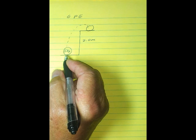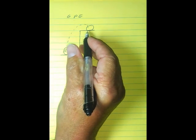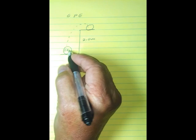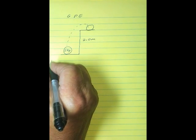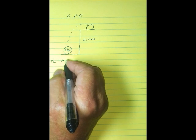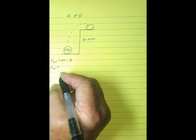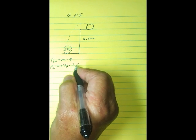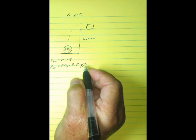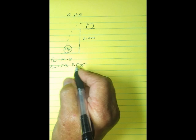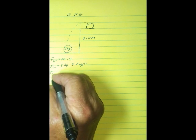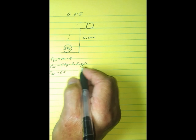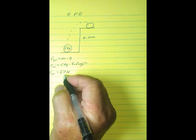Let's first take a look at the weight of the ball. In order to put the ball up on the shelf, we have to overcome the weight of the ball to move it that particular distance. We know that the force of weight equals mass times gravity. The mass is 5 kilograms, and gravity is 9.8 meters per second squared. I'm going to round 9.8 to 10, so 10 times 5 gives us a weight of 50 newtons.